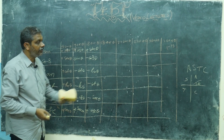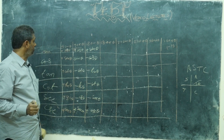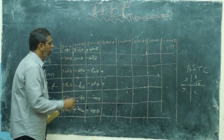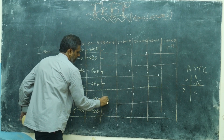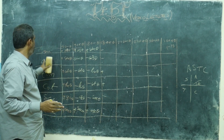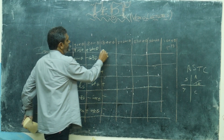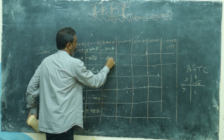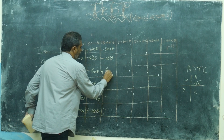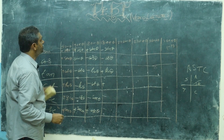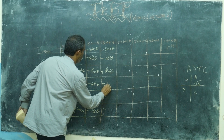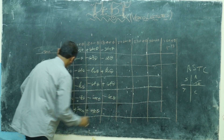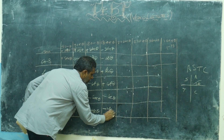Then 180 plus — where is it standing? Third quadrant. Third quadrant — who is positive? Tan and its reciprocal cot are positive. Remaining all fellows are negative. Because of 180, no change will come. So sin 180 plus theta is minus sin theta. Cos 180 plus theta is minus cos theta. Tan 180 plus theta is tan theta. Cot 180 plus theta is cot theta. Secant 180 plus theta is minus secant theta. Cosecant 180 plus theta is minus cosecant theta.